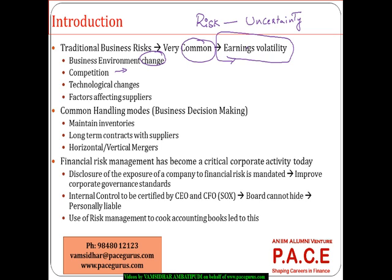Companies handle these kinds of risks quite effectively as part of their regular day-to-day operations. Though they may call it business decision making, it is nothing but risk management itself. If they foresee that raw materials may not arrive in time or the cost of raw materials is going to go up, they handle that risk by maintaining better inventory positions or by entering into long-term contracts with suppliers — which means they are doing risk management.